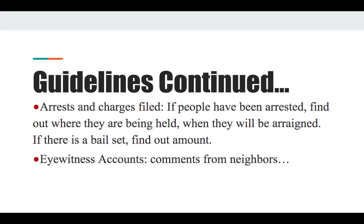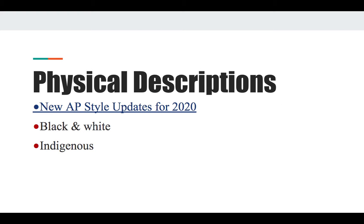Continuing guidelines: arrests and charges. If people have been arrested, you want to find out where they're being held, when they will be arraigned, and if there's a bail set, you want that amount. You also want eyewitness accounts — take comments from neighbors, go to the scene, figure out who was there, then go to the area where people are from and start going door to door or making calls to figure out who saw what and who was related to whom.